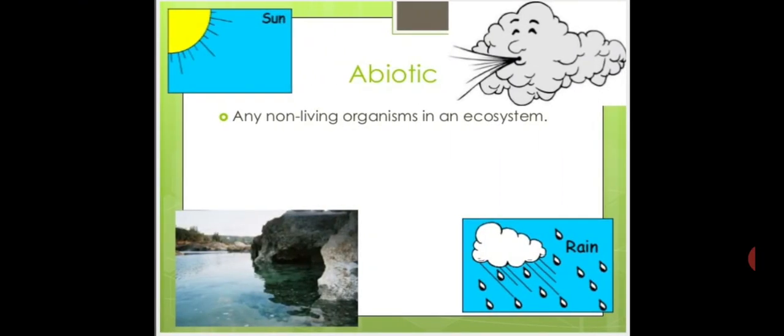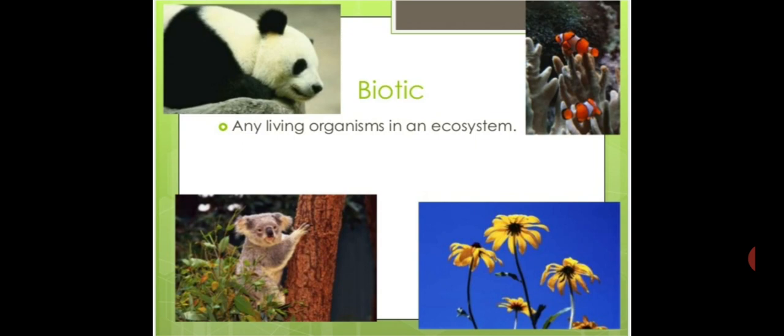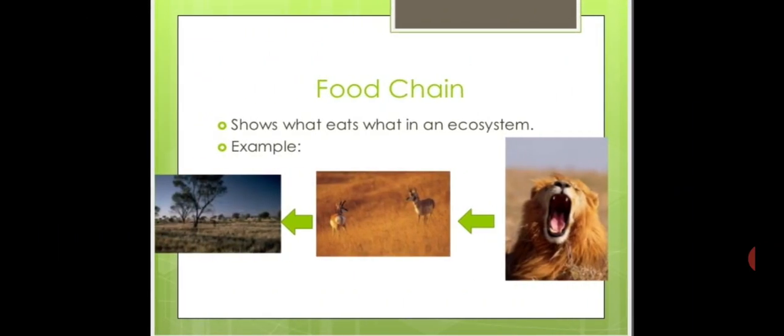Another important part of our ecosystem is the abiotic factor. Any non-living organism in an ecosystem is said to be an abiotic component. Examples include the sun, clouds, rocks, and rain. Then there is the biotic factor — any living organism in an ecosystem, whether it's a big animal, a microorganism, or a plant. All these contribute together as biotic components of our ecosystem.